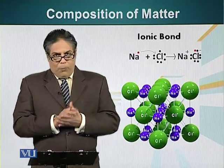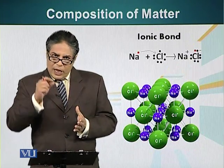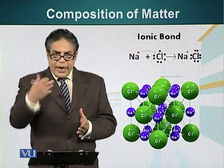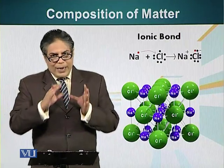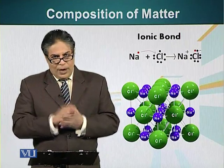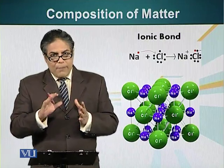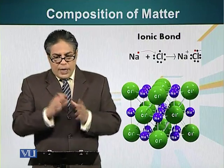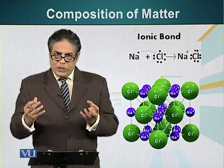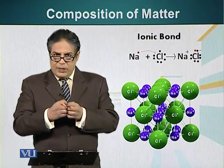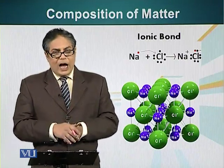Let's look at another type of bond — the ionic bond — in which an atom donates its electron to another atom. When an atom donates its electron, it becomes positively charged, and the atom that receives the electron becomes negatively charged. Because these two atoms have opposite charges, they attract each other, and this attraction results in a bond called an ionic bond.